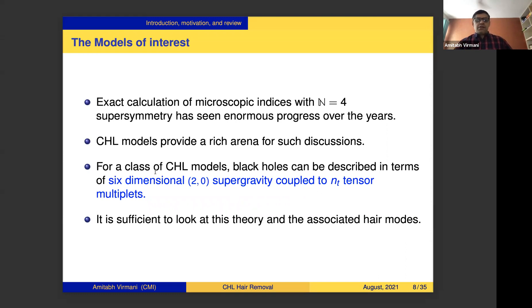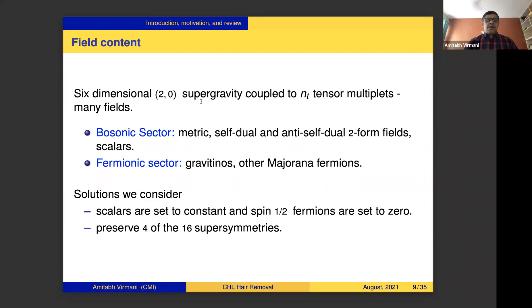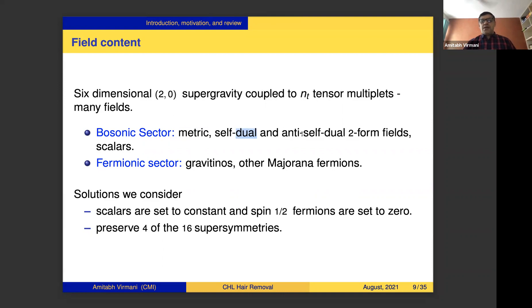For a class of CHL models, the black hole solutions can be described in terms of six-dimensional (2,0) supergravity coupled to a number of tensor multiplets. The setup is purely gravitational in a sense — the only thing changing is the number of tensor multiplets. The six-dimensional (2,0) supergravity is a fairly complicated theory of gravity. Its bosonic sector consists of the metric, self-dual two-form fields, anti-self-dual two-form fields, and a number of scalars.